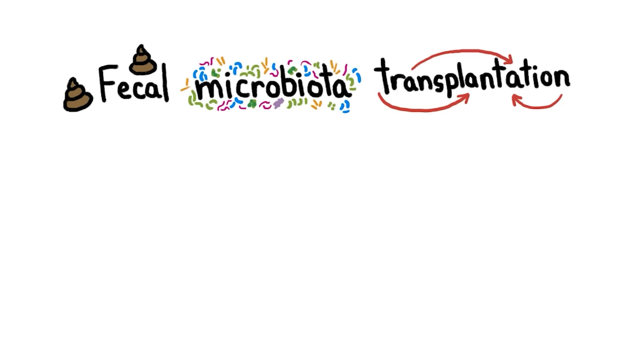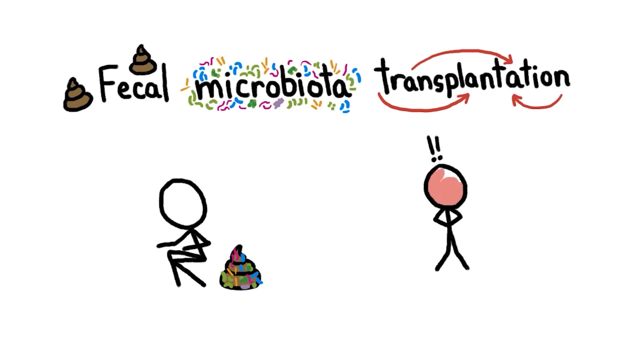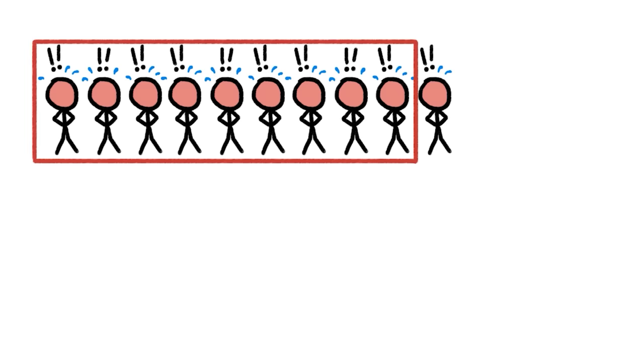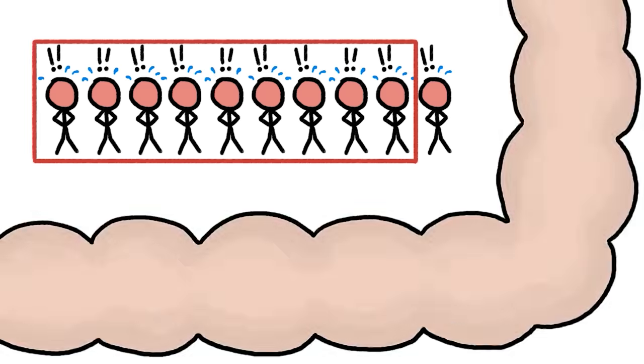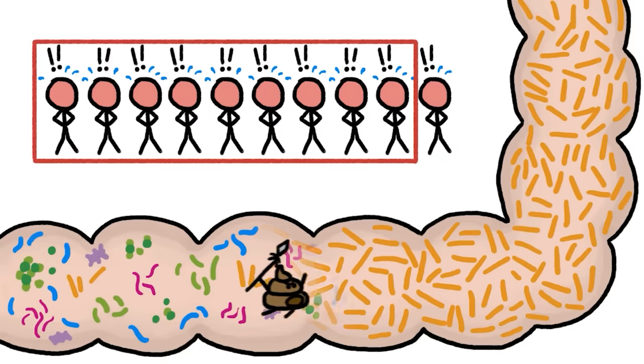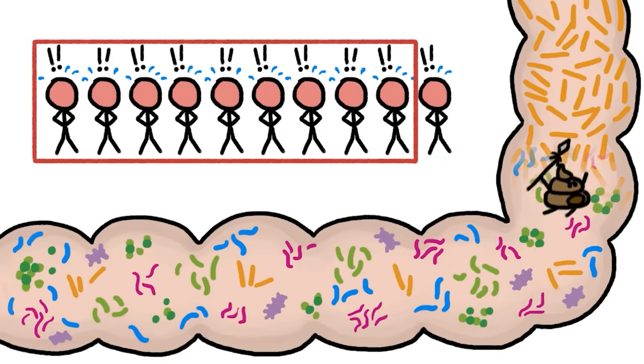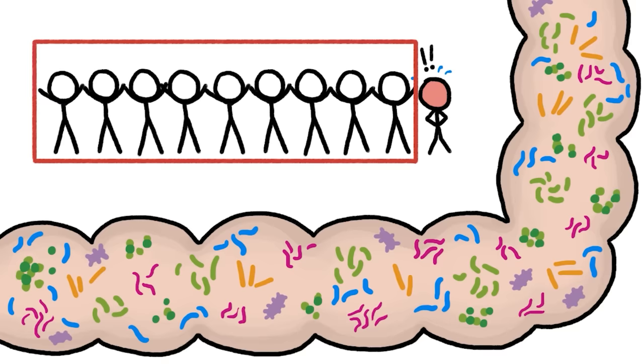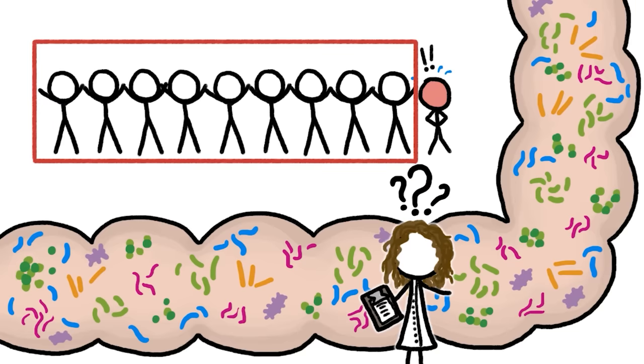In a fecal microbiota transplantation or poop transplant, someone with a healthy, diverse community of gut bacteria donates a sample to be administered to a patient with a C. diff infection. And in about 400 of 470 documented cases, the transplanted bacterial community quickly became dominant, causing the patient's digestive system to recover and stabilize, though scientists still don't know exactly how that happens.